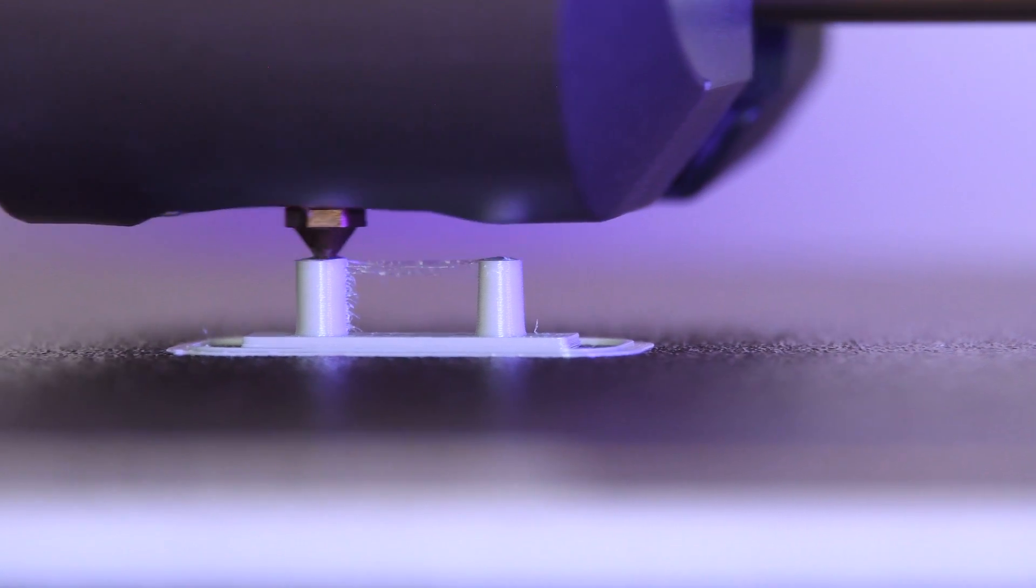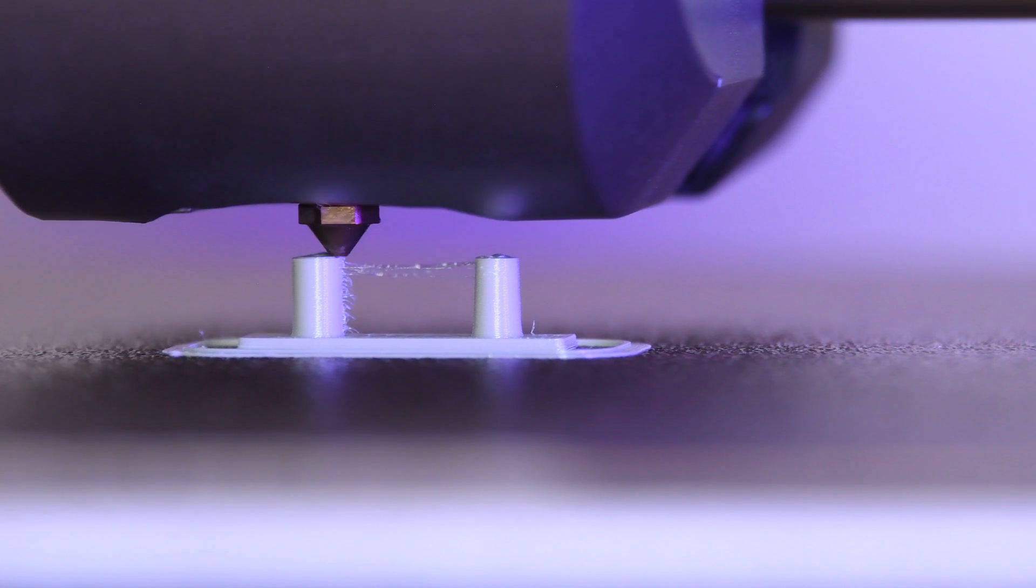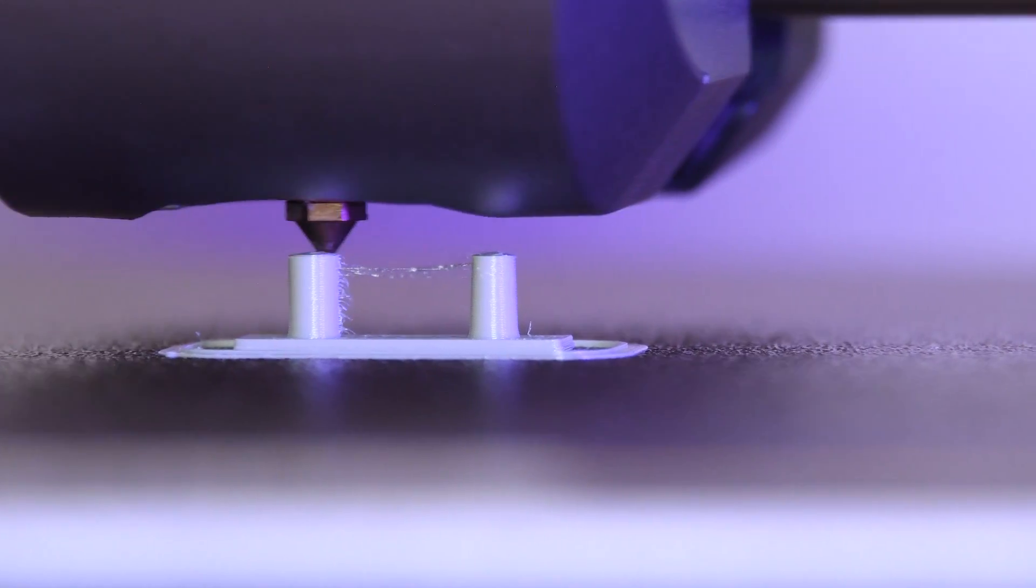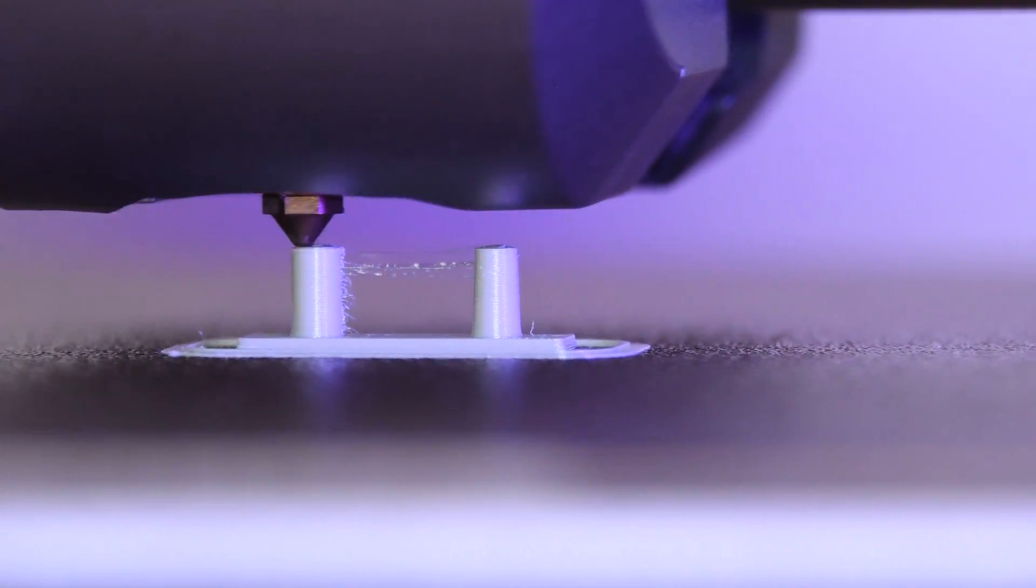The first print setting that you should calibrate for such a seam is the retraction. The retraction defines how much and how quickly the filament is pulled back into the nozzle after extrusion. If the retraction is too low, some of the melted filament escapes between two parts of the object which leads to stringing. This will also result in too much material being extruded in the seam.